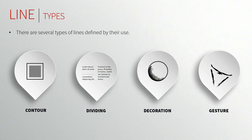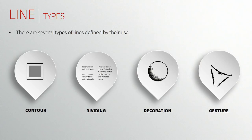Third, decoration lines — does anybody know what type of decoration line is on screen? Philip got it quickly: it's cross-hatching or hatching. This is an example of using decoration lines to add shading or form to an object. Finally, gesture lines — these are quick, rough, continuous lines used to capture form and movement. You see them used a lot in cartoons. They give a sense of movement to your designs. We don't generally use them too often, but just to make you aware of them.